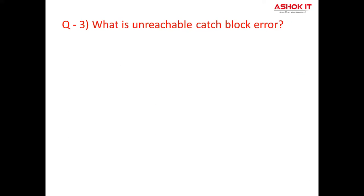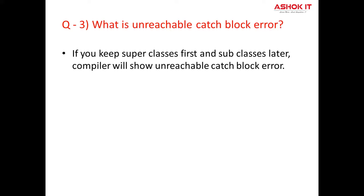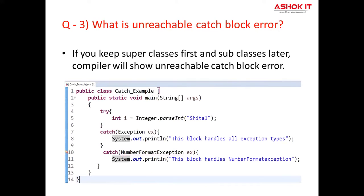You can see this example. Question number three: What is unreachable catch block error? If you keep superclasses first and subclasses later, the compiler will show an unreachable catch block error. When you are keeping multiple catch blocks, the order of catch blocks must be from most specific to general. That is, subclasses of exceptions must come first and superclasses later. Number format exception is a specific exception, so specific exceptions come before general exceptions.